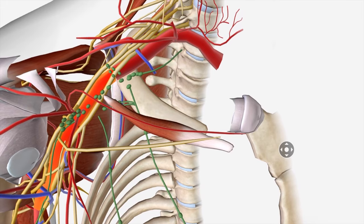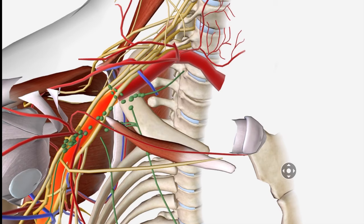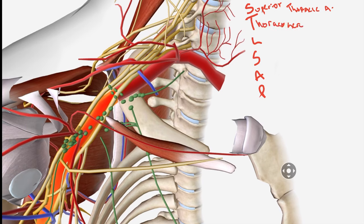Once we have the axillary artery, there are many branches coming off of it. Let's draw a mnemonic: 'Screw the Lawyer, Save All Patients.' That stands for: Superior thoracic artery, Thoracoacromial trunk, Lateral thoracic artery, Subscapular artery, and then Anterior and Posterior humeral circumflex arteries.